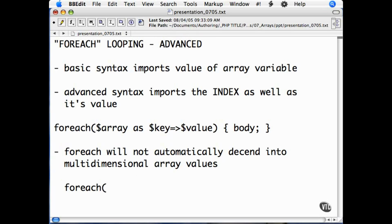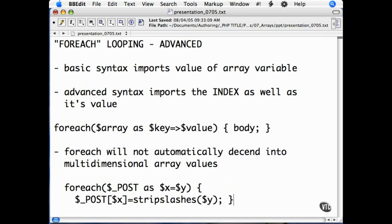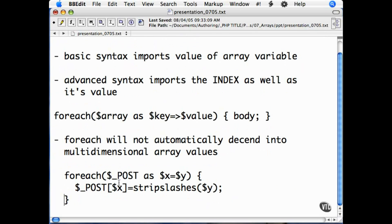Do foreach, our POST superglobal as x for the name, y as the value. So we set POST x, which will end up as post, and then the name equal to stripslashes y, which is the value. Neaten it up, and there you go.